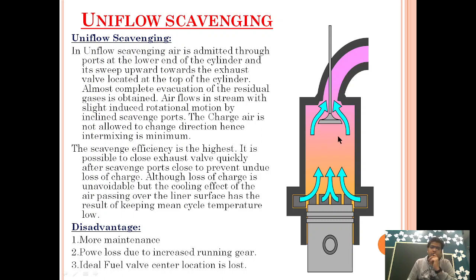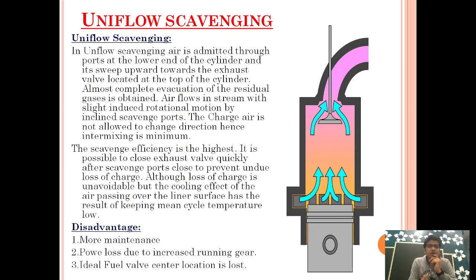So what is Uniflow scavenging? In Uniflow scavenging, air is admitted through a port at the lower end of the cylinder and it sweeps upward toward the exhaust valve located at the top of the cylinder. The exhaust port concept which was there in cross and loop scavenging was removed, and a fresh exhaust valve was installed at the center. The incoming fresh air drives out the remaining exhaust gas through this exhaust valve while it is open.